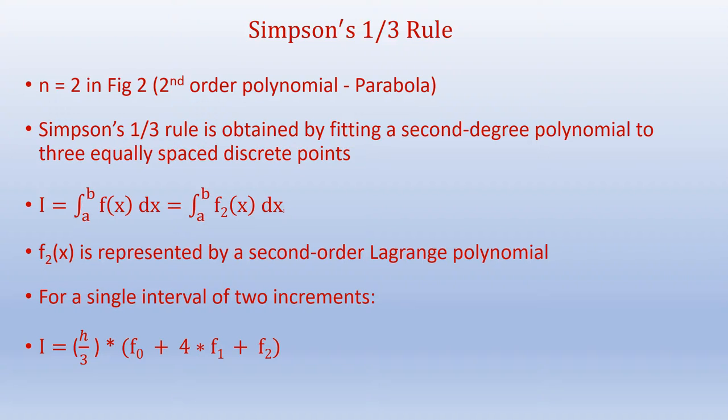Under Simpson's one-third rule we use n equals 2, as shown in figure 2, which is represented by a second order polynomial, a parabola. Simpson's one-third rule is obtained by fitting a second degree polynomial to three equally spaced discrete points. So we have I equals integral a to b f(x) dx, which is approximated by integral a to b f_2(x) dx. f_2(x) is represented by a second order Lagrange polynomial.